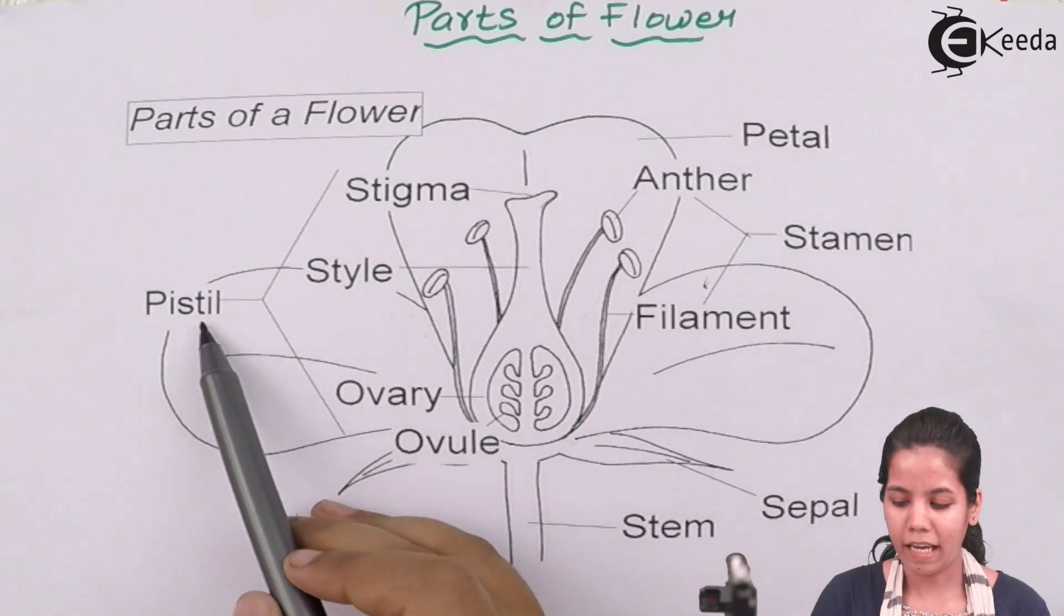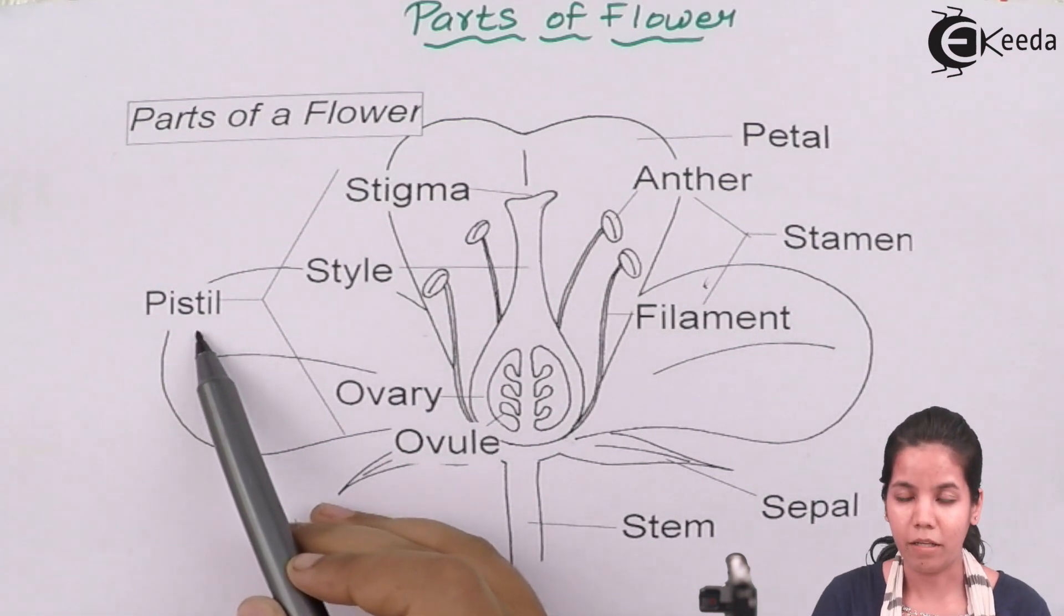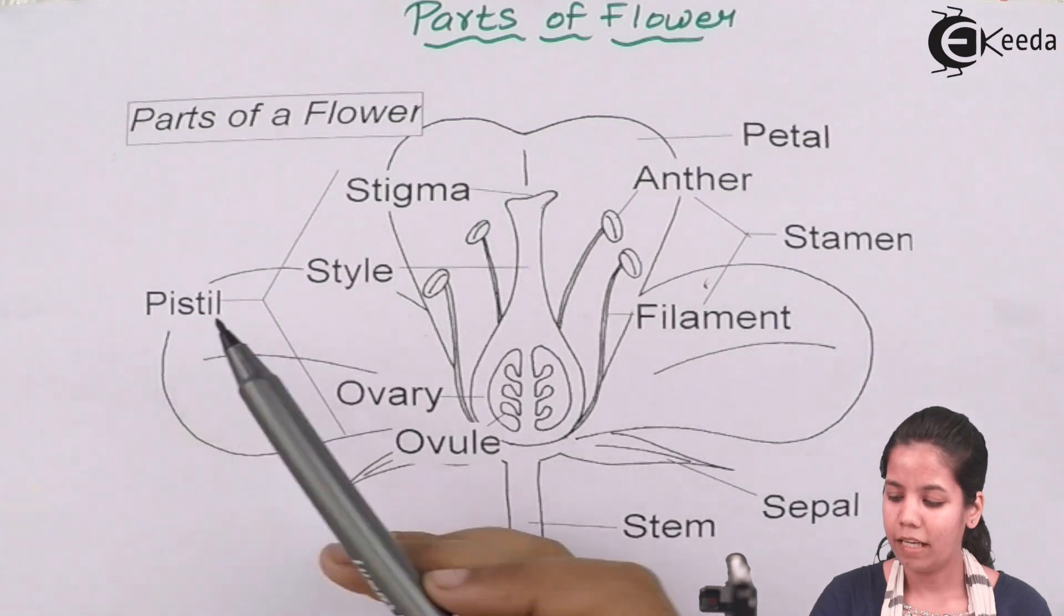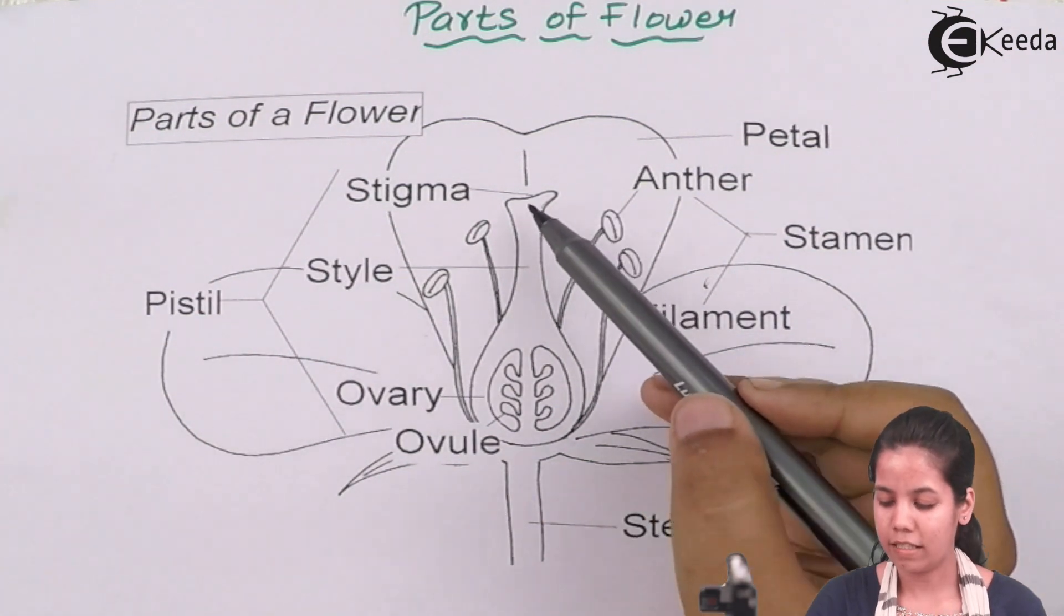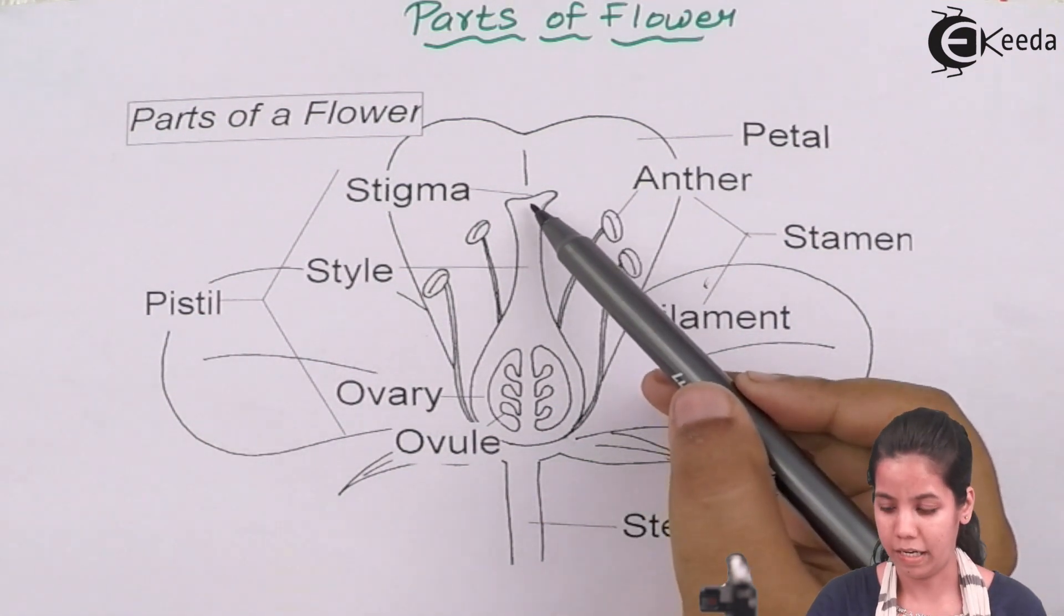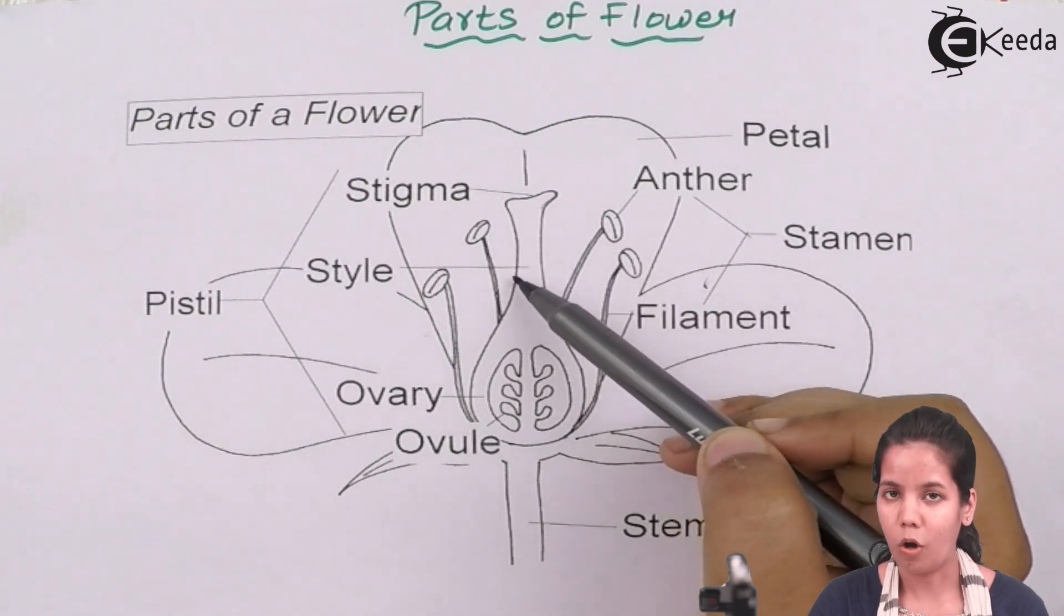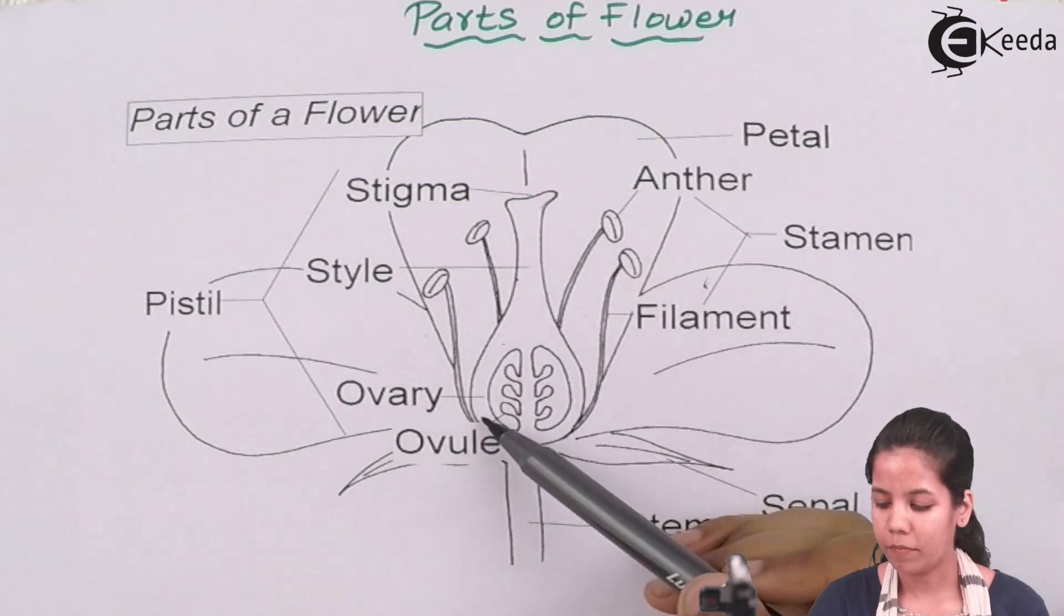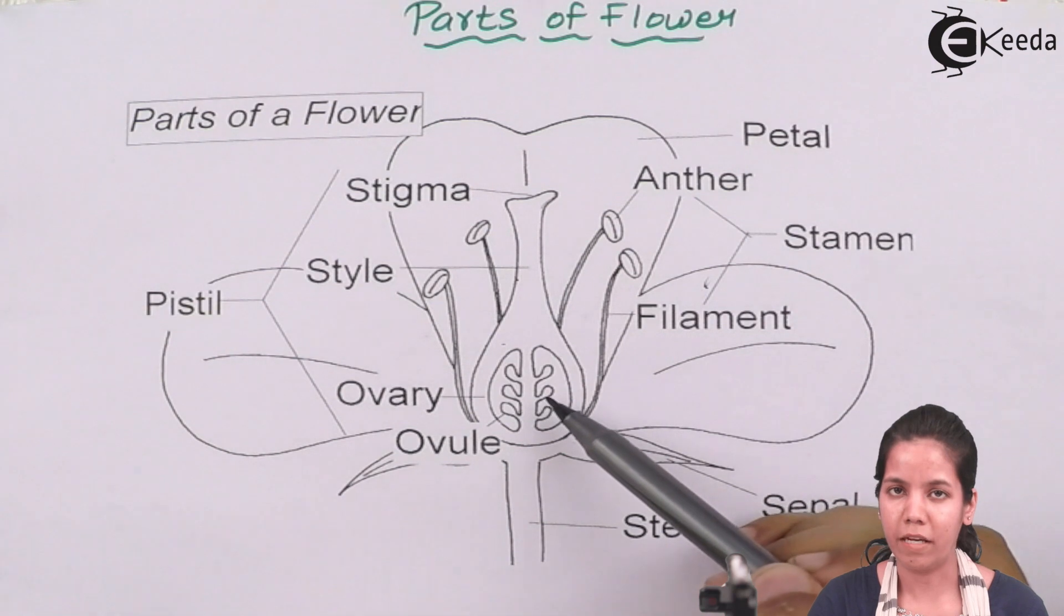Whereas your female gametophyte is called as carpel, pistil, or gynoecium. It is divided into three different parts: stigma, where the pollen grains will enter; style, the hollow passage; and the ovary, inside which ovules would be present, or you can say the female egg would be present.